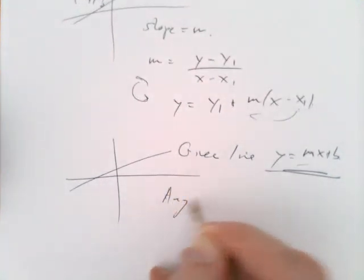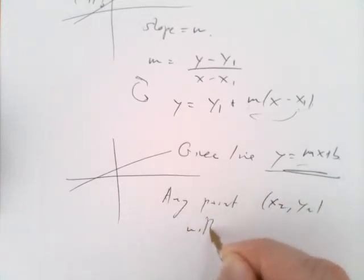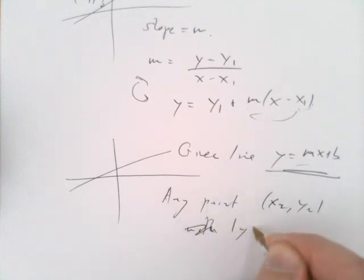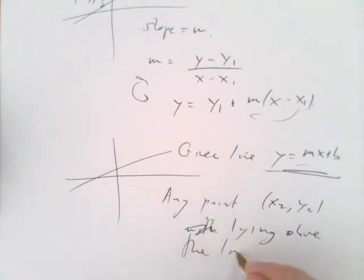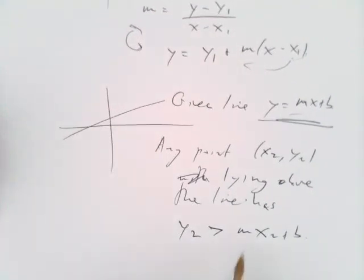Any point x2,y2 lying above the line has too much y to lie on the line. Its y is too large, and so y2 is bigger than mx2 plus b. Similarly, if it lies below the line, it would be smaller instead of bigger.